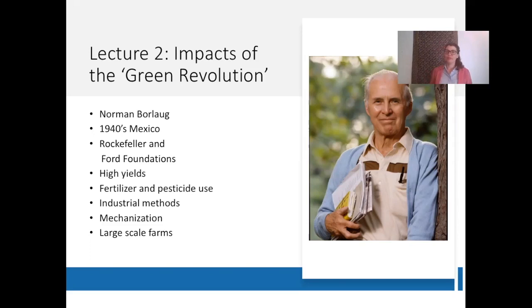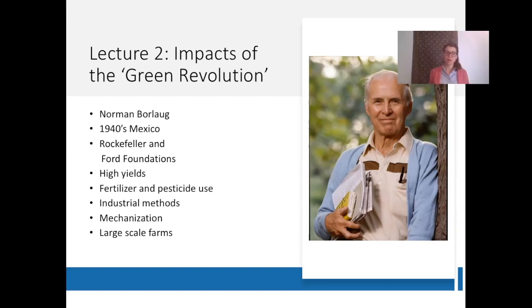The term Green Revolution refers to the rise of agricultural practices beginning in Mexico in the 1940s. During the war in 1939 to 1945, scientists were investing large amounts of money in modern weaponry, and these included biological warfare. In the process, they had discovered different types of pesticides, herbicides, and fertilizers that had real practical and efficient uses when they were employed in the agricultural sector.